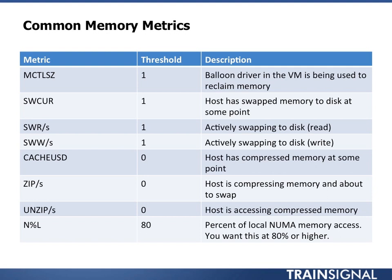SWCUR indicates the host has swapped memory to disk at some point — it's kind of a running total. Anytime a host swaps to disk, it's bad; performance goes through the floor. It's not as efficient as a guest swapping, because the guest knows what memory it probably won't need, whereas vSphere doesn't have that level of understanding. Swap Read and Swap Write mean it's actively swapping to disk right now — either reading or writing — which is bad.